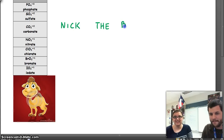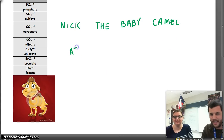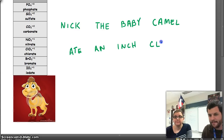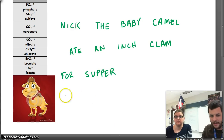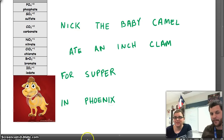Nick the baby camel — ate, like 'I ate' food. Nick the baby camel ate an inch, like the length. Clam. For supper — 'for' as in F-O-R, and 'supper' like dinner. In Phoenix, like the city — or Phoenix class for those of y'all that have that. So the full sentence is: Nick the baby camel ate an inch clam for supper in Phoenix. Okay, I can remember that — but what does all this mean?